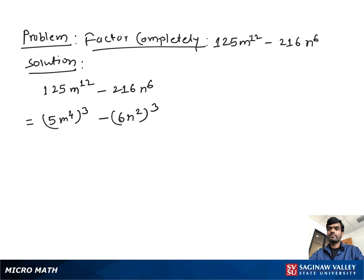If we see, it looks like A³ minus B³ form. You know A³ minus B³ is equal to (A minus B) times (A² plus AB plus B²).